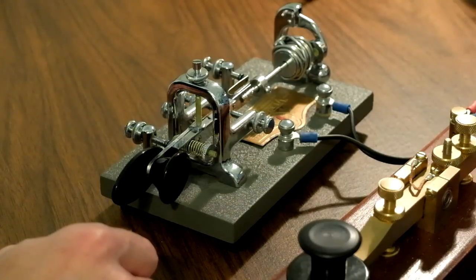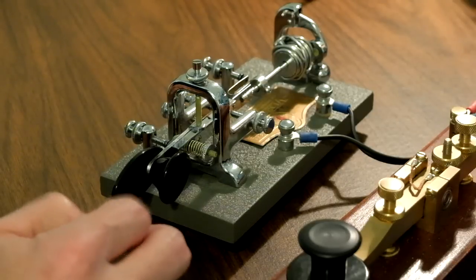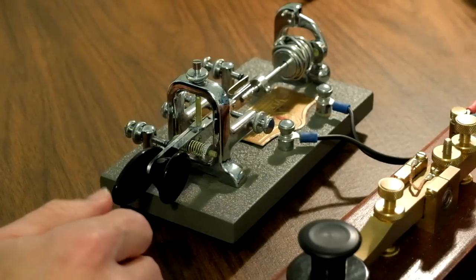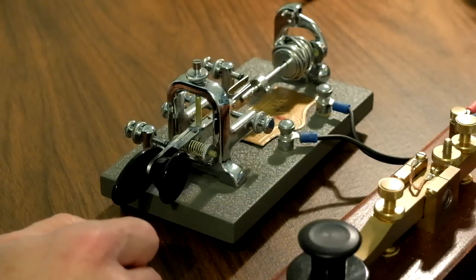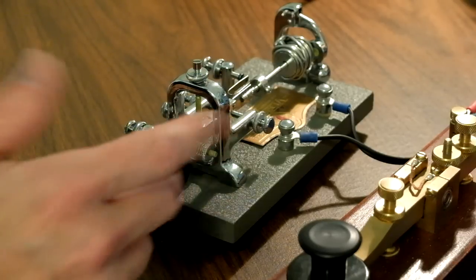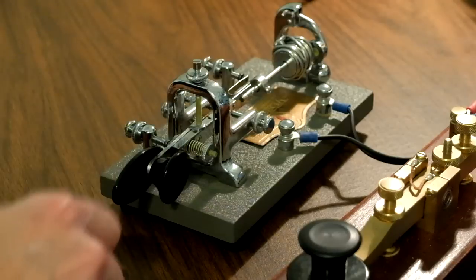So when you hear a bug operator work you, and you're operating at less than 20 words a minute—or I think normally a bug goes about 25 words a minute and up—you're going to hear a unique cadence. It's because their dits are faster than their dahs because they're trying to slow down for you, but their bugs just don't go that slow. So here's an example.